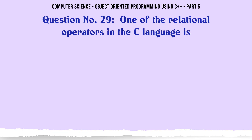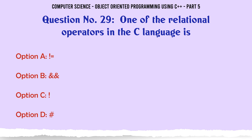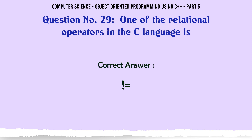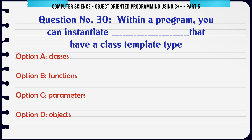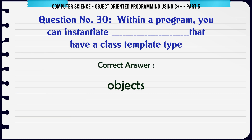One of the relational operators in the C++ language is. A. B. C. D. The correct answer is one of the standard relational operator symbols. Within a program you can instantiate objects that have a class template type. A. Classes. B. Functions. C. Parameters. D. Objects. The correct answer is: Objects.